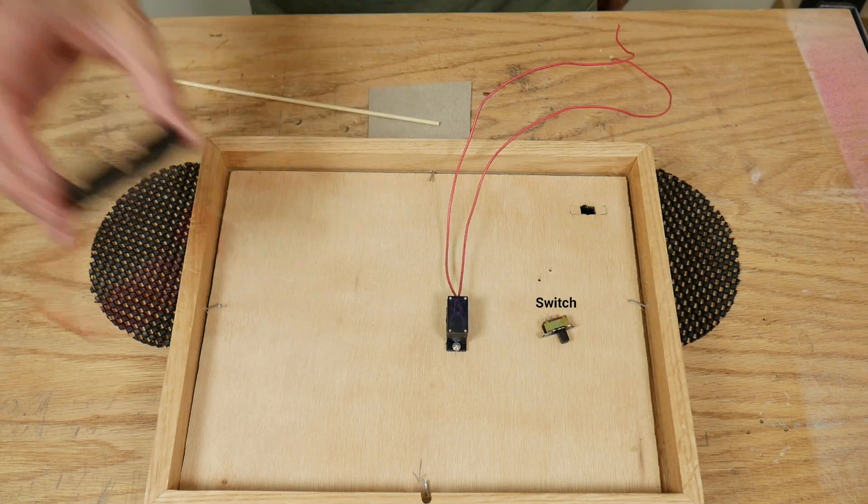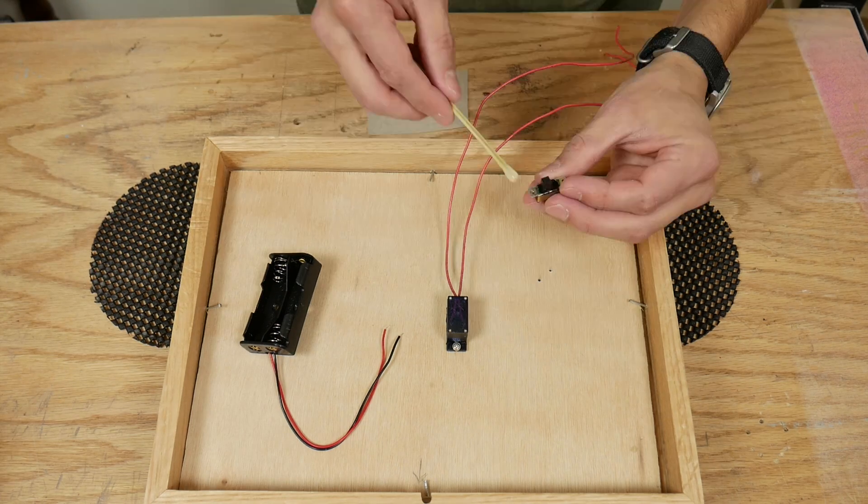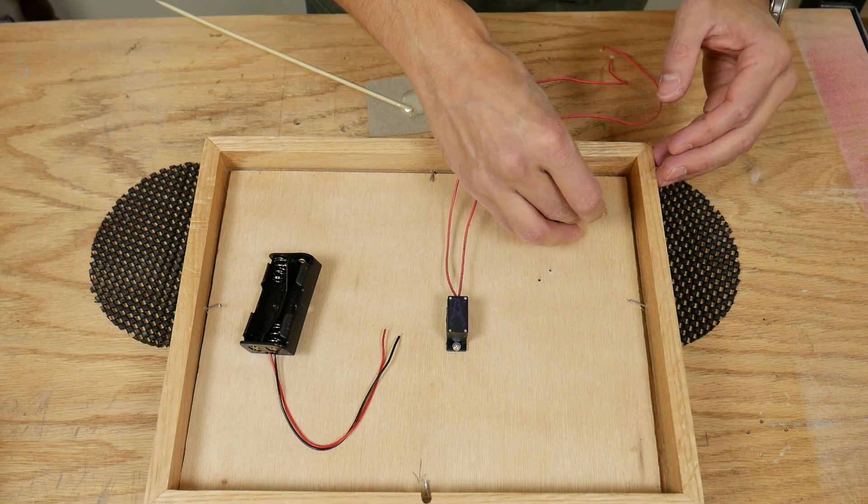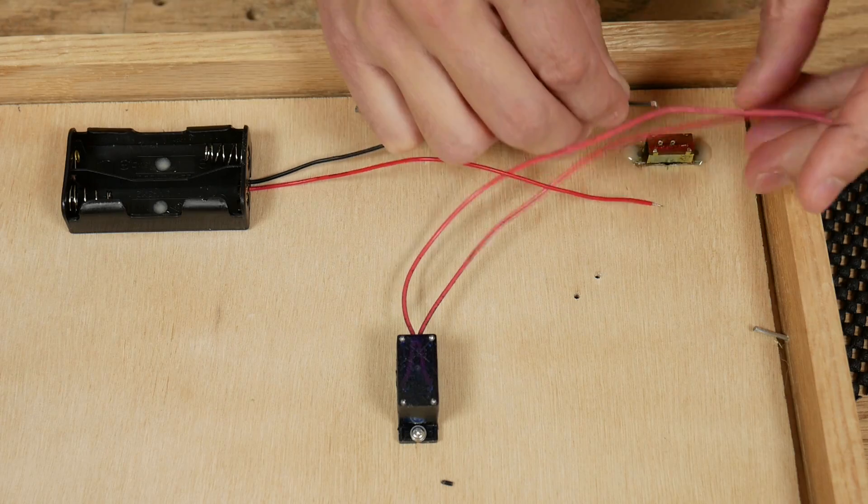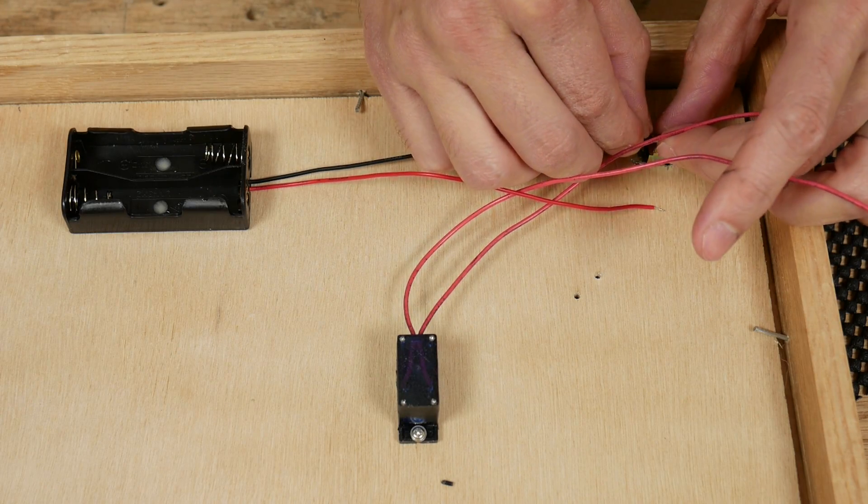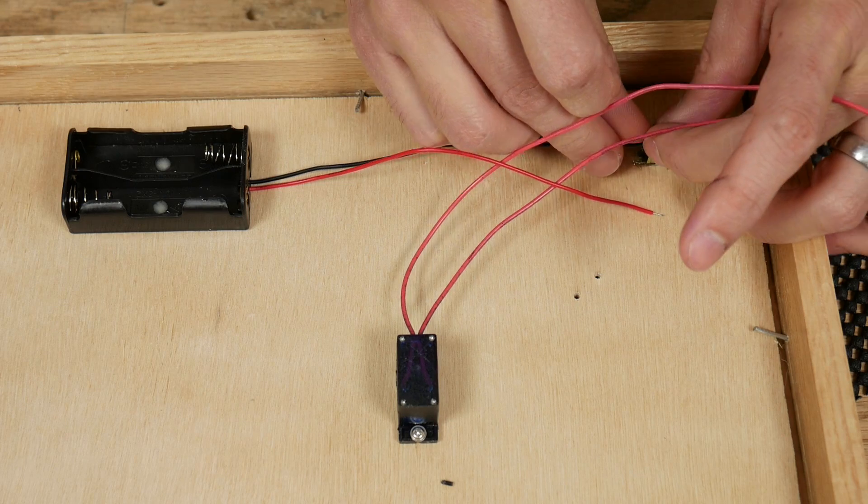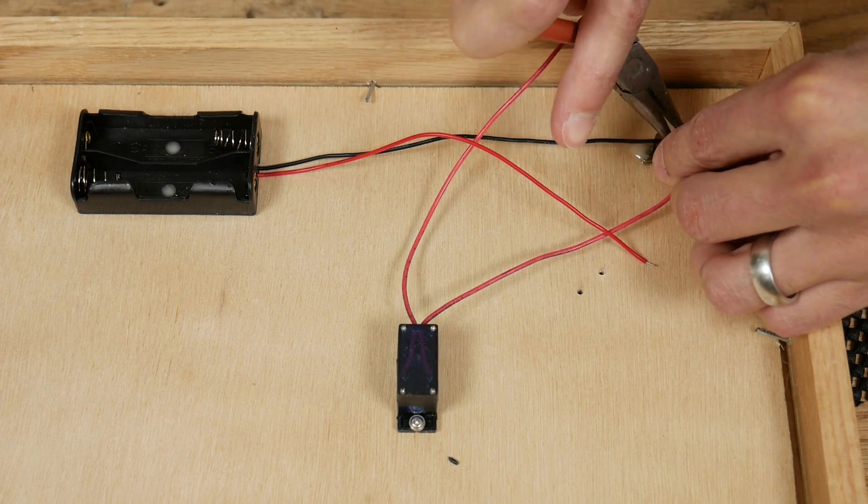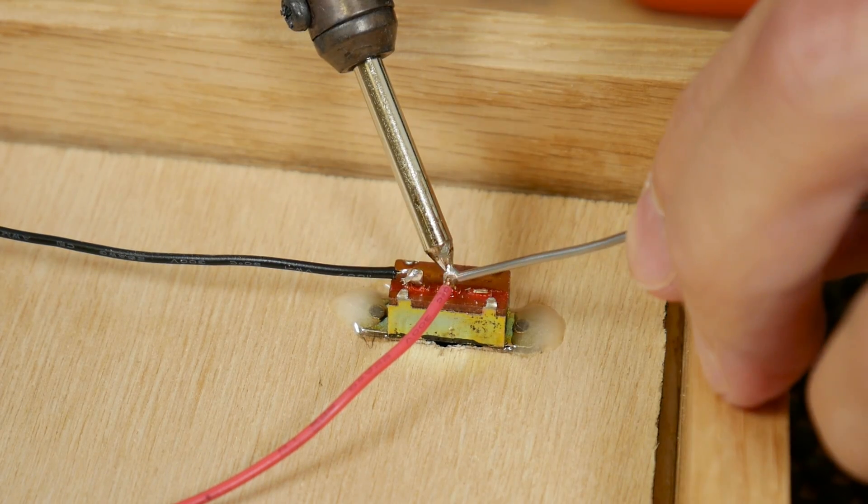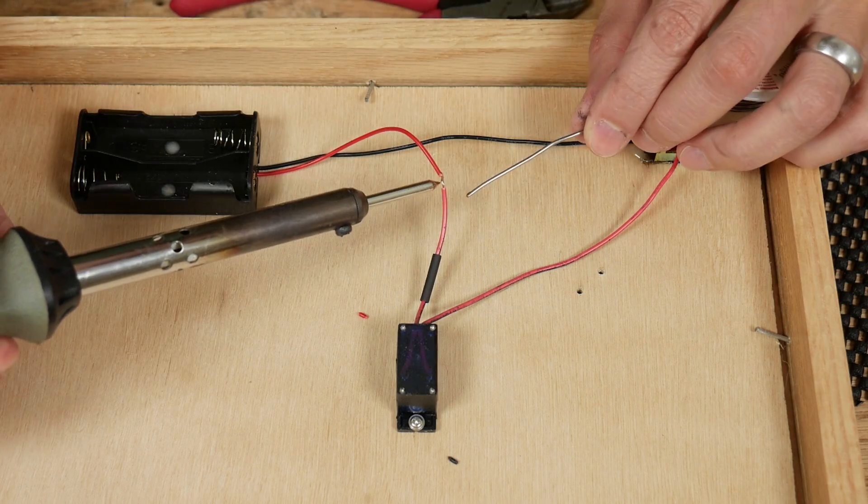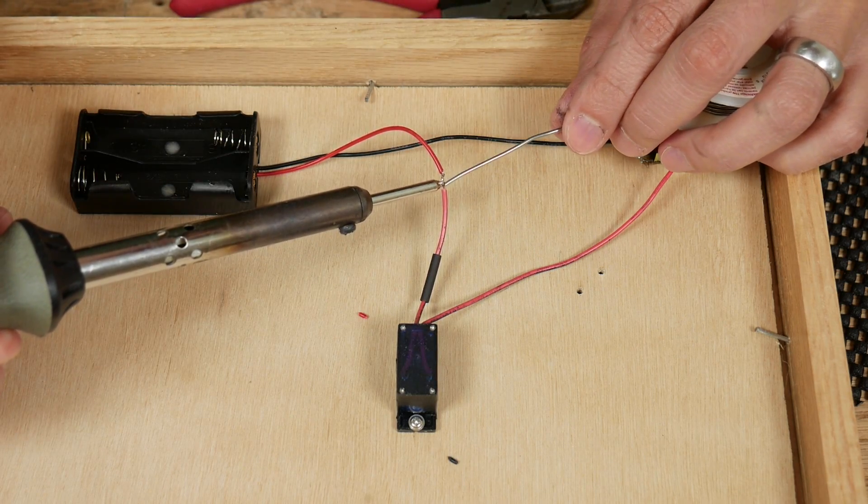I got a little switch and a 2AA battery holder and epoxied them to the back of the base plate. Then I soldered the wires together. One wire from the battery went to the switch. One wire from the servo went to the switch. And the remaining wire from the battery was connected to the remaining wire from the servo.